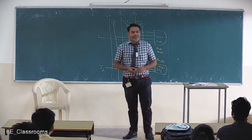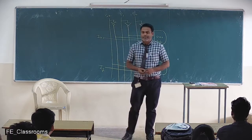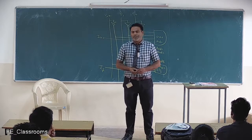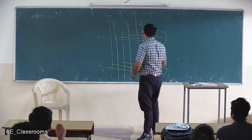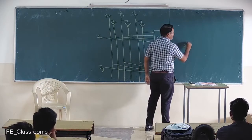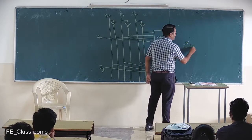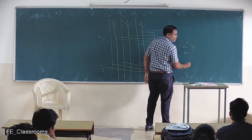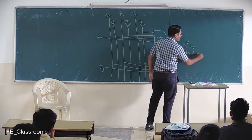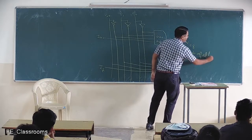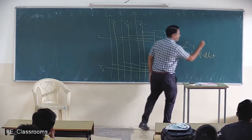How many select lines do we require for an 8-to-1 multiplexer? Because it totally depends upon the formula 2 raise to n equal to 8, where n is equal to the number of select lines. So from this we can find out the number of select lines.